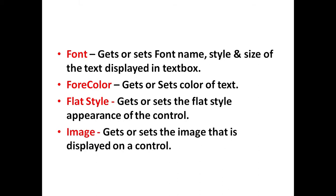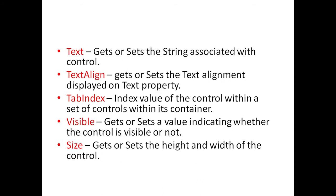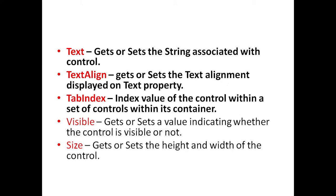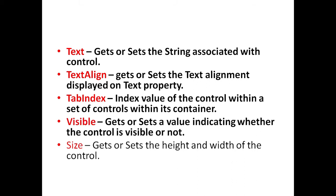Image property is used to get or set the image that is displayed on a control. Text property is used to get or set the string associated with the control. TextAlign property is used to get or set the text alignment displayed on the Text property. TabIndex is used to set the index value of the control within a set of controls in its container. Visible property is used to get or set the value indicating whether the control is visible or not. Size property is used to get or set the height and width of the control.